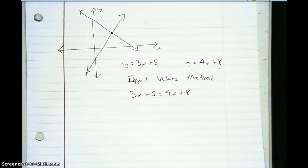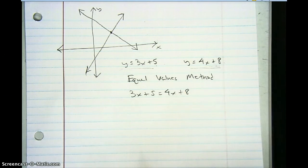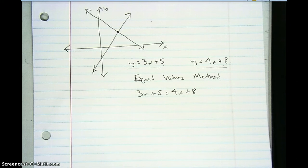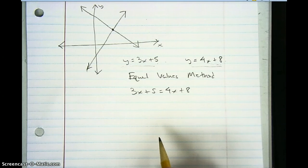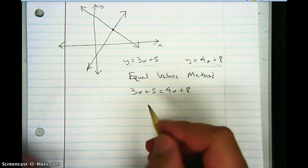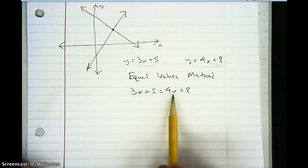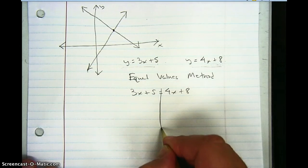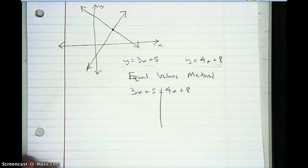All I have to do is solve this equation for x, then plug that x value back into either one of my two original equations to get the y value — that's the point where the two equations cross. To solve for x, I need to get all the x's to one side. Since I have 4x on the right and only 3x on the left, I'll get all the x's to the right side.